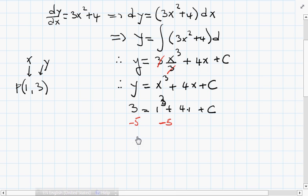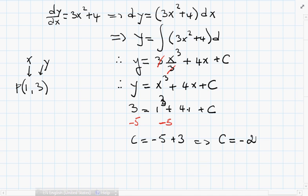My equation will be C equals -5 + 3, which means that C equals -2. This is our constant of integration.